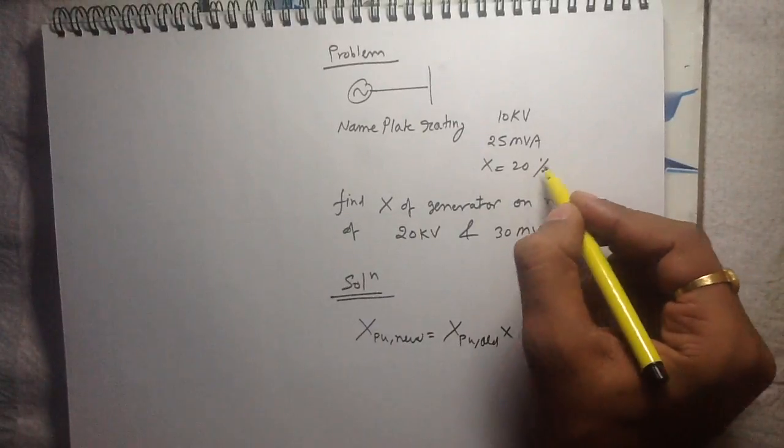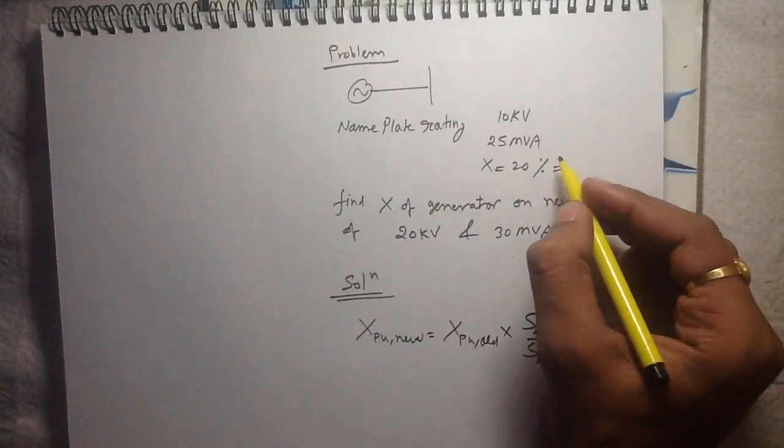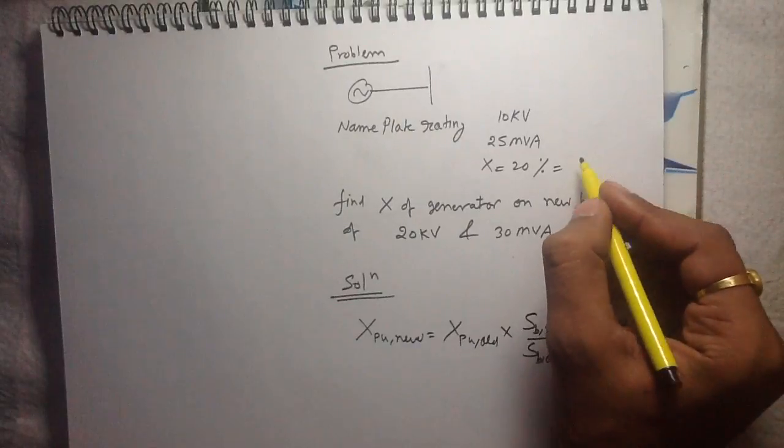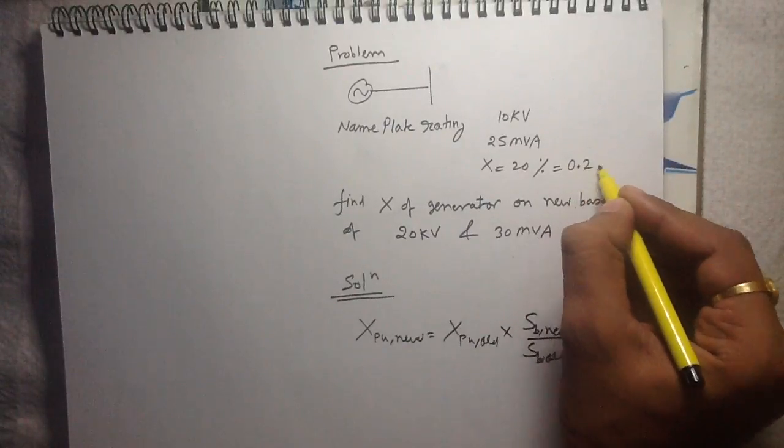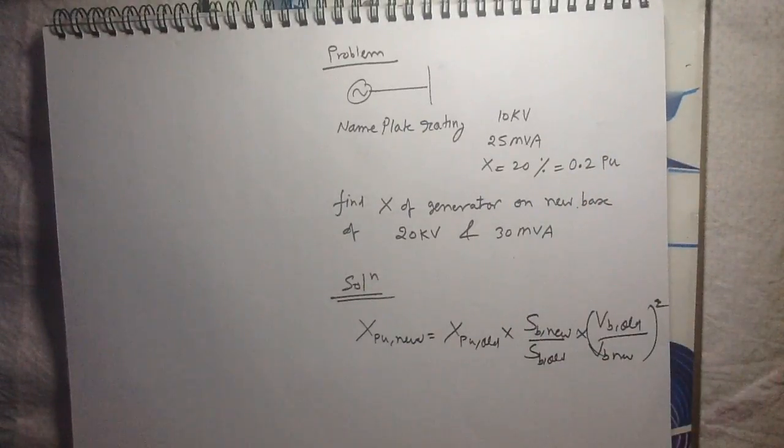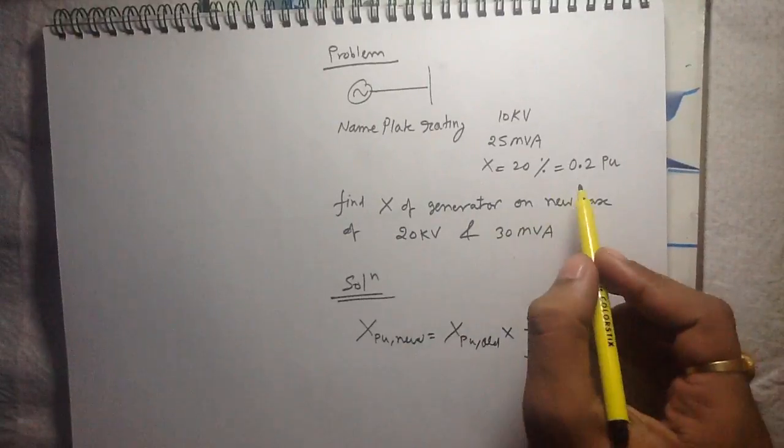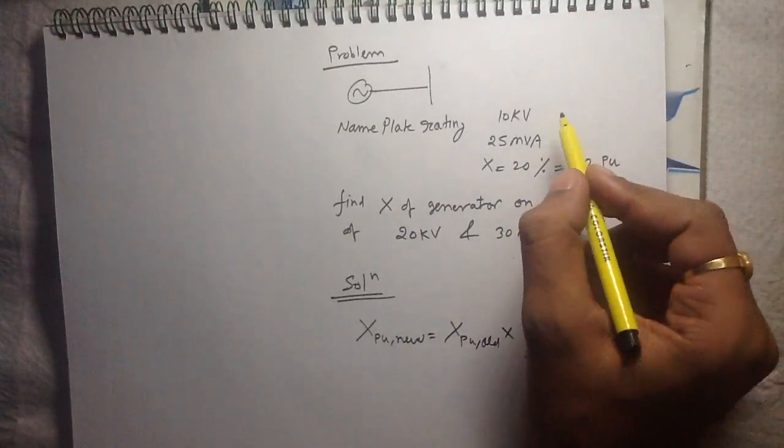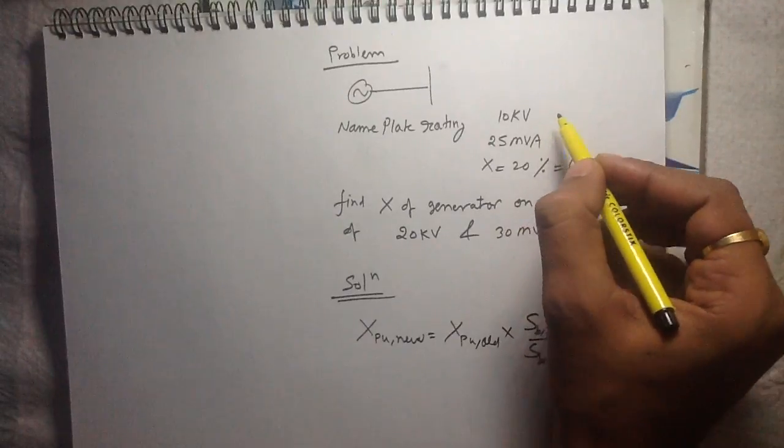To convert the percentage value to the per unit value, divide by 100. So this is 0.2 per unit. This per unit value is given on a base of 10kV, 25mVA.